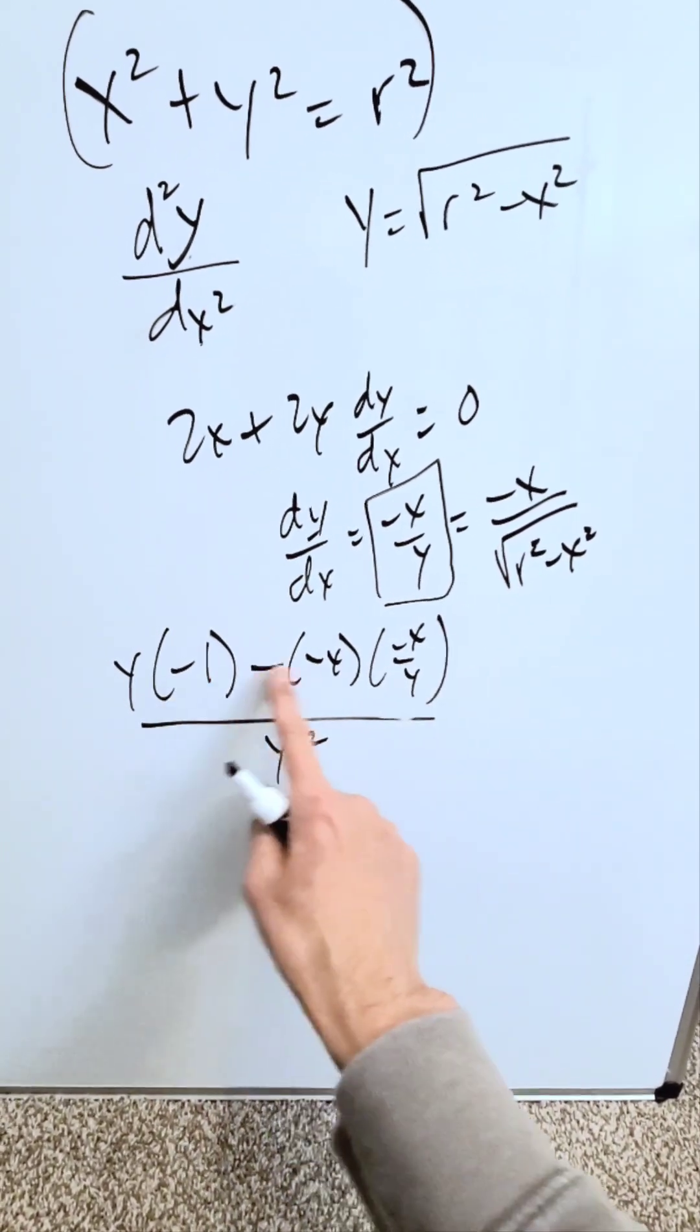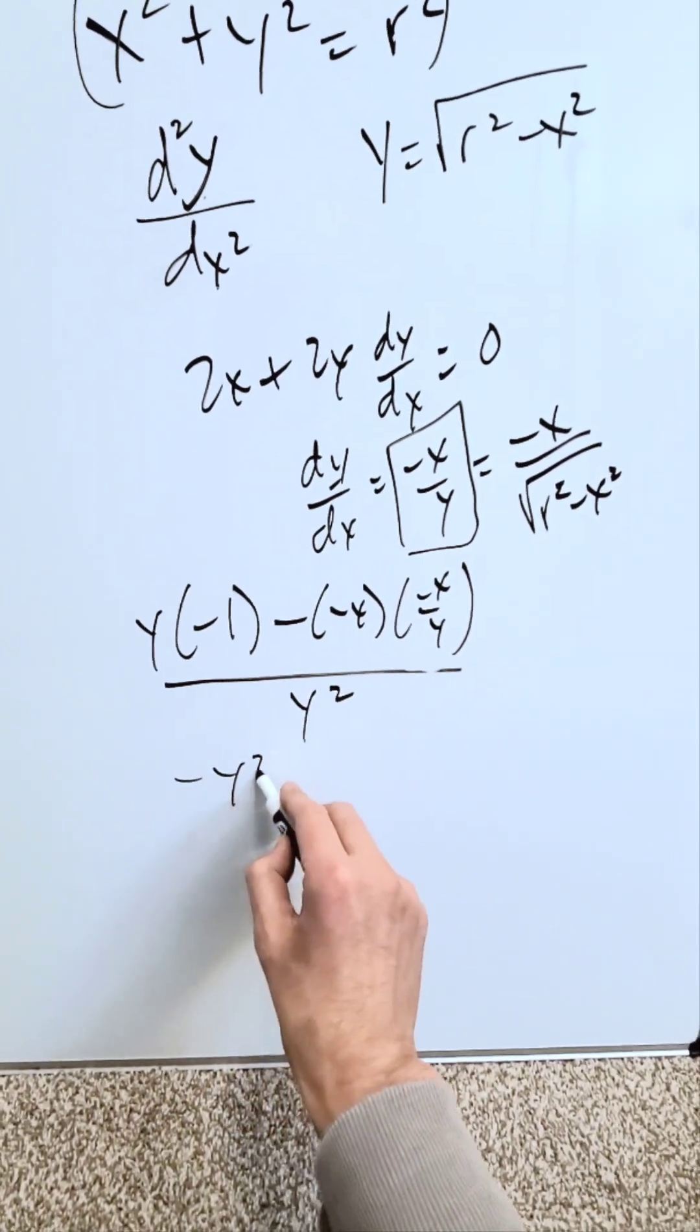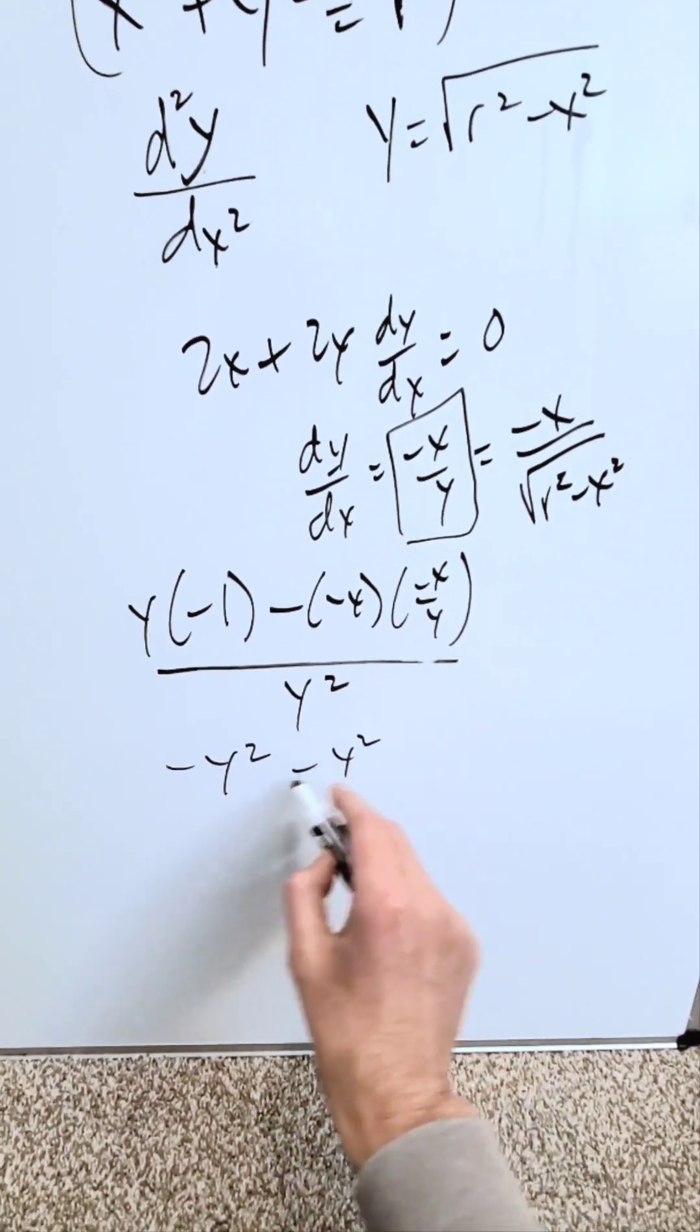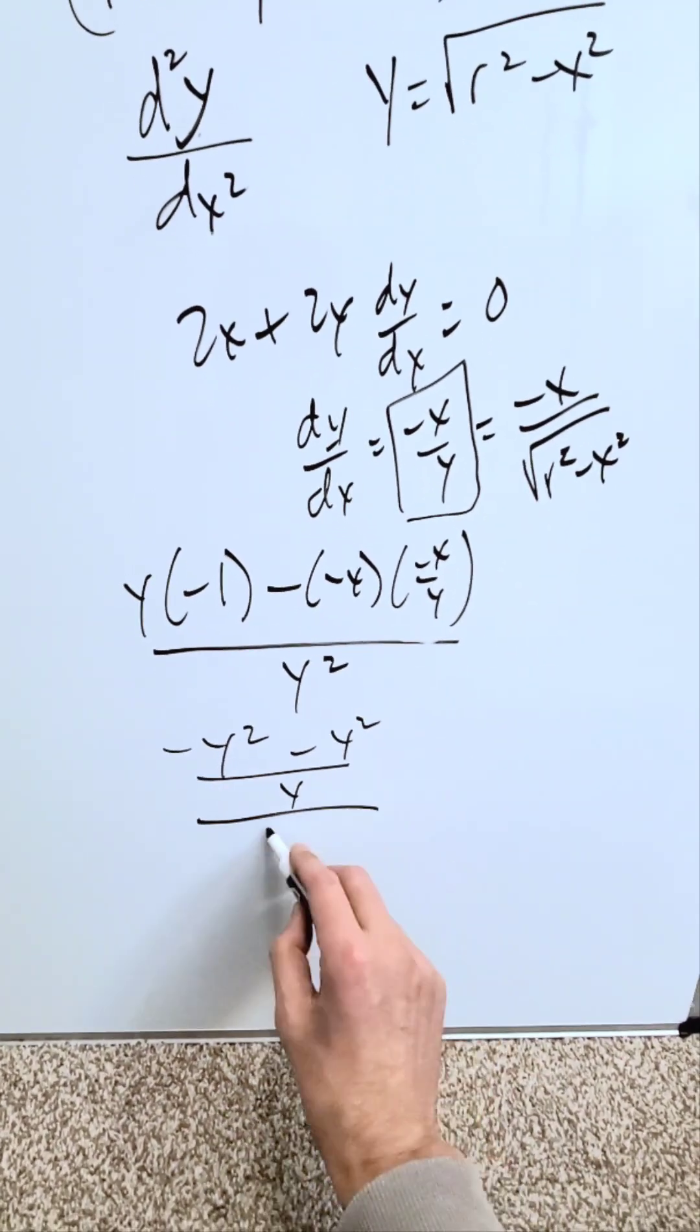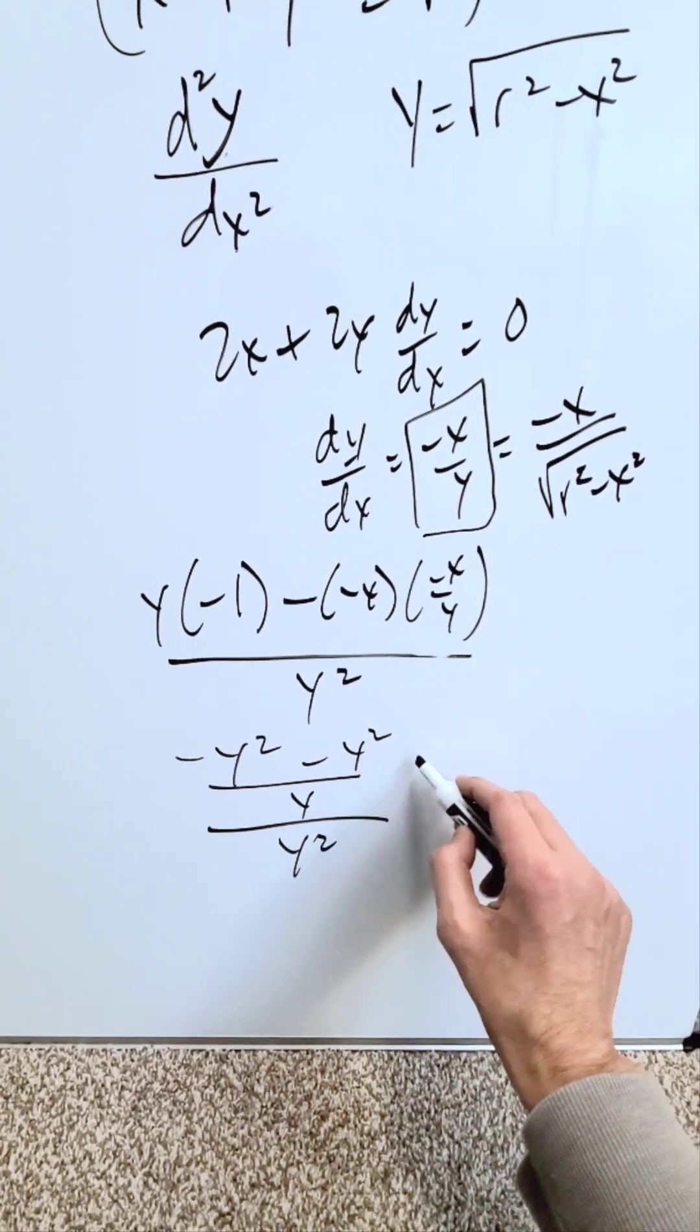Run this through your fraction algebra. In the numerator you'll have minus y squared minus x squared over y, over y squared. This here is the numerator expression.